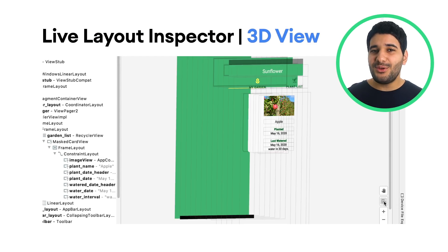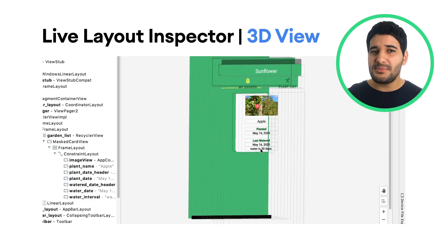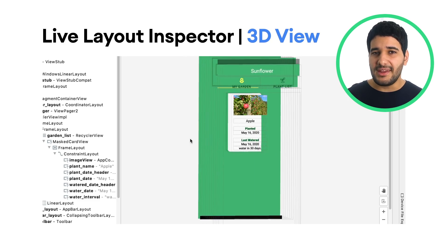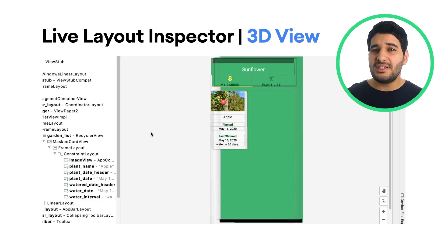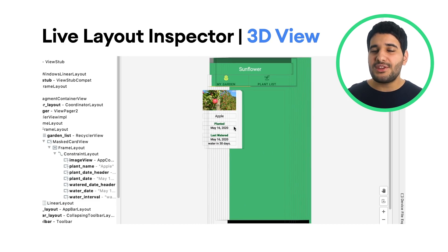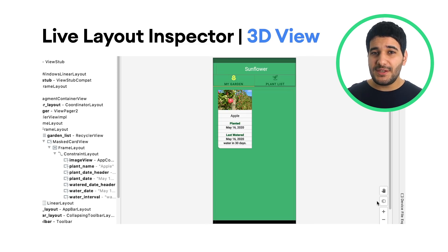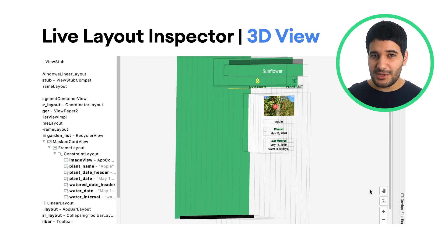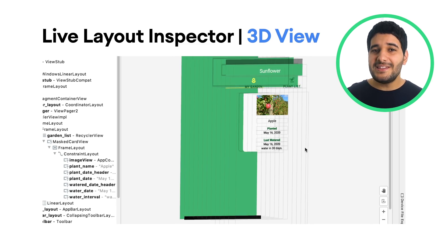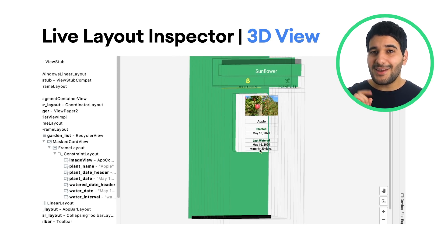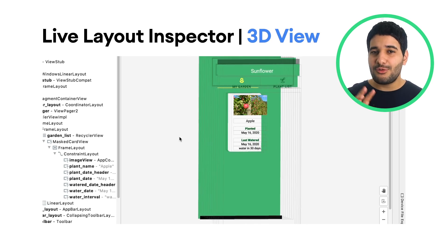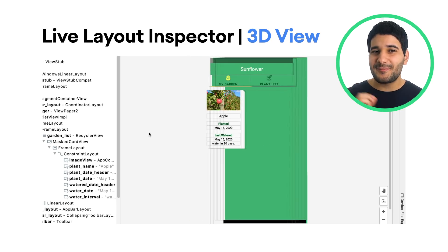The 3D view assists you by showing your app's view hierarchy at runtime with advanced 3D visualization. To use this feature in the live layout inspector window, simply click on the layout and rotate it.